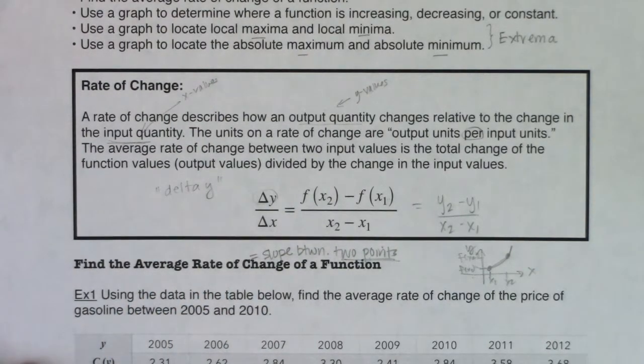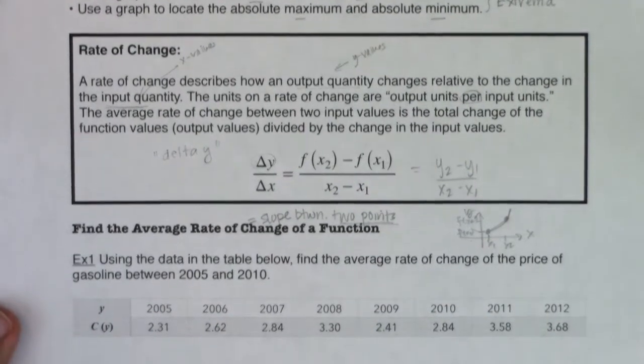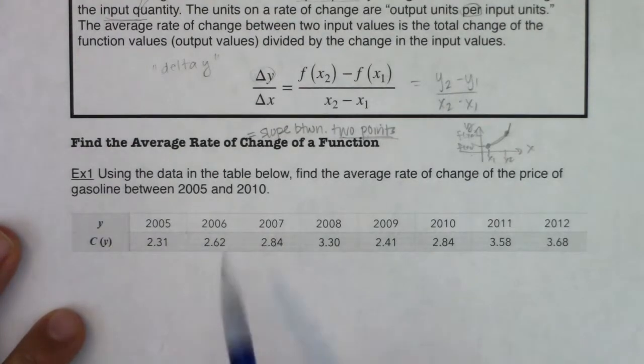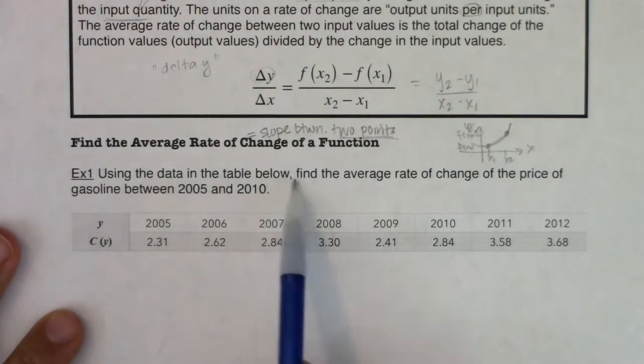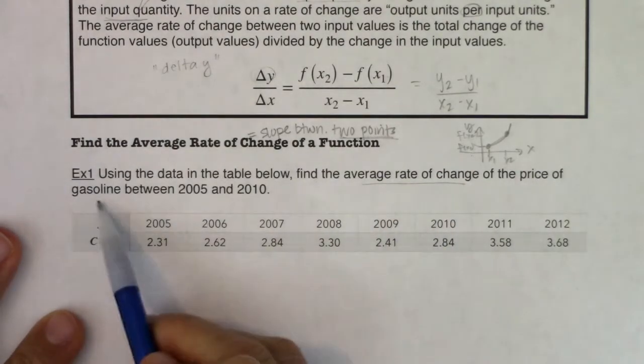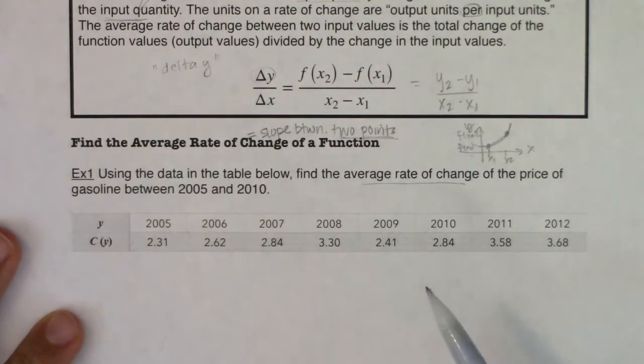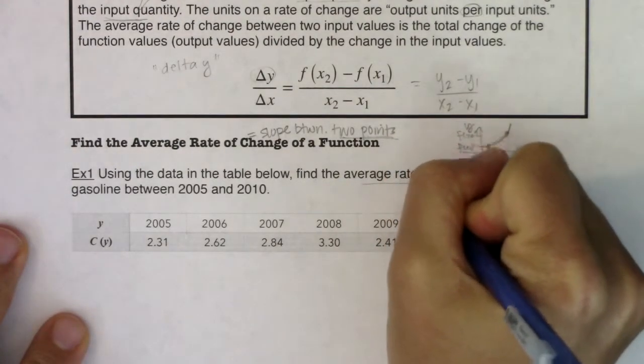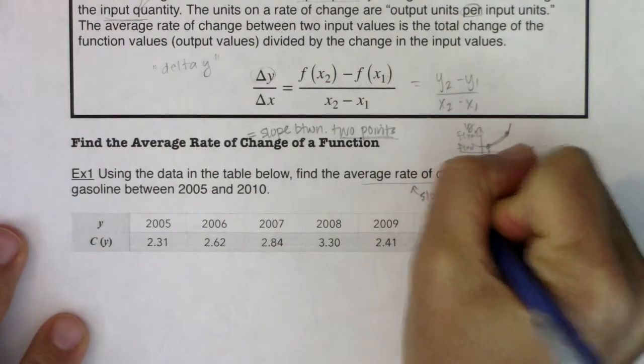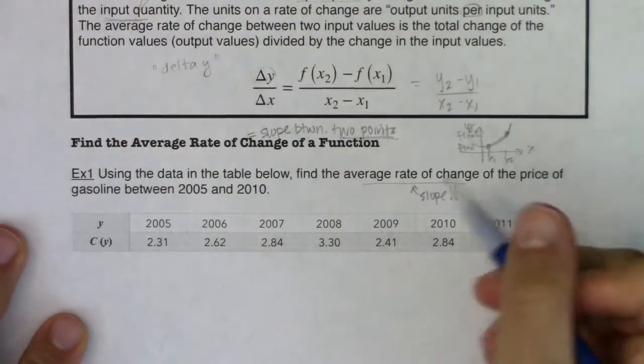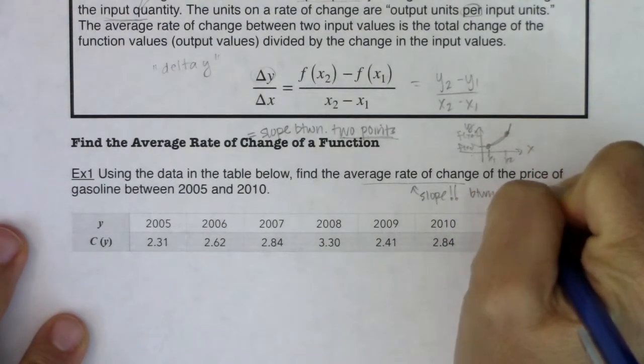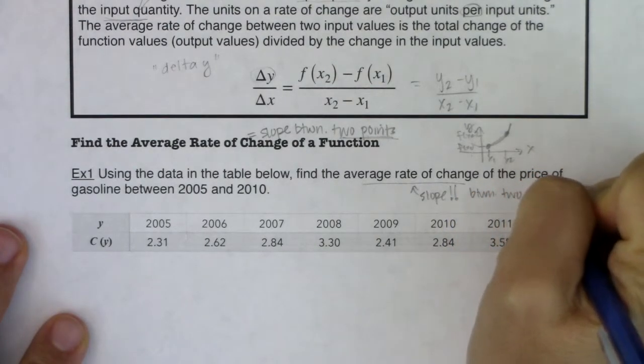So we're going to find the average rate of change of a function. This says, using the data in the table below, find the average rate of change of the price of gasoline between 2005 and 2010. Okay, so I hear average rate of change, and my spidey senses go off, and I say, well, you know what, I need the slope. And because it's the average rate of change, it's going to be the slope between two points.